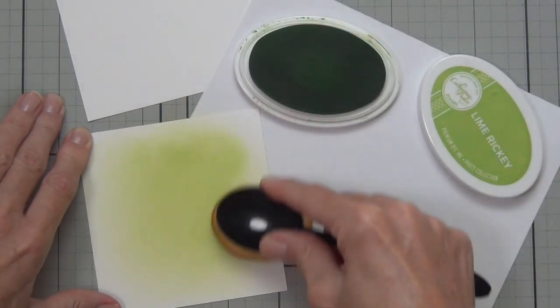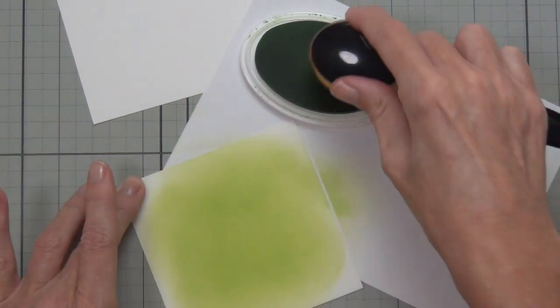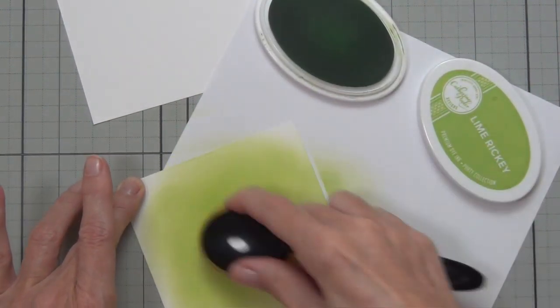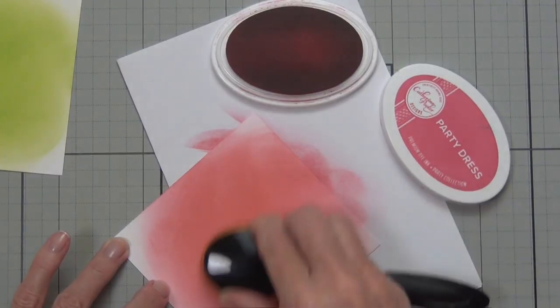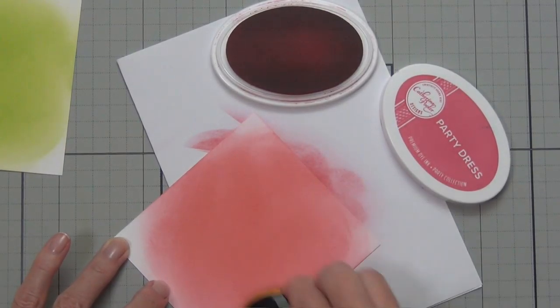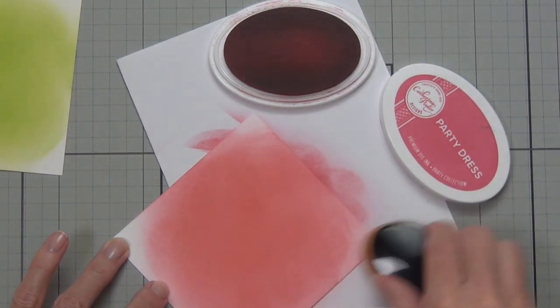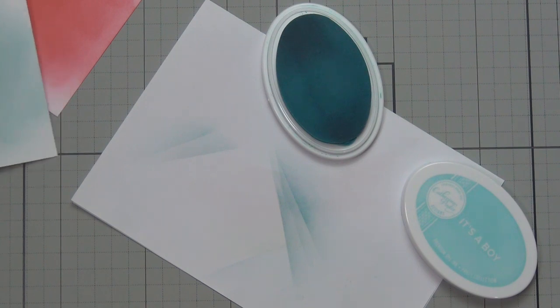I started with It's a Boy and it just wasn't blue enough for me, so I had to come back in and make it a little bit brighter. That's the good thing about these blending brushes—they're very forgiving. You can actually mix different colors together, but I wanted just solid cardstock today.